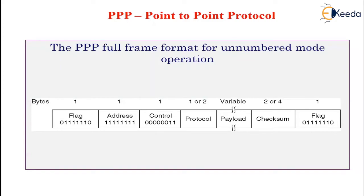All PPP frames begin with a standard HDLC flag byte (0, 6 continuous ones, and 0), which is byte stuffed if it occurs within the payload field. Next is the address field, always set to binary all ones to indicate that all stations are to accept the frame. The address field is followed by the control field, whose default value indicates an unnumbered frame — meaning PPP does not provide reliable transmission using sequence numbers and acknowledgements by default. In noisy environments such as wireless networks, numbered mode can be used. Since address and control fields are always constant in default configuration, LCP provides a mechanism for both parties to negotiate omitting them altogether, saving two bytes per frame.